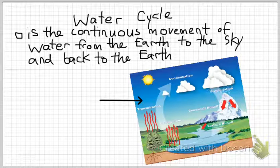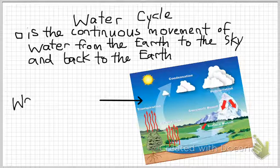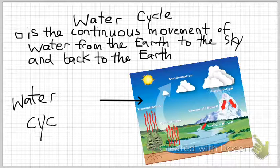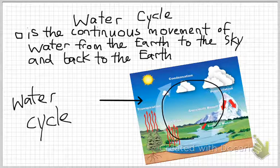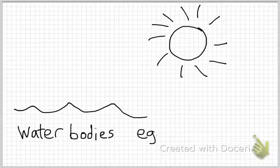And of course we have Sean with us as well. Now, the topic is water cycle — we're going to do a revision together. Water cycle is the continuous movement of water from the earth to the sky and back to the earth again. Water cycle basically goes on and on and on. Will water cycle ever stop? It just keeps going and going and going.